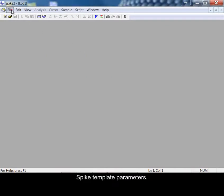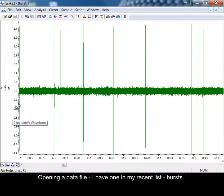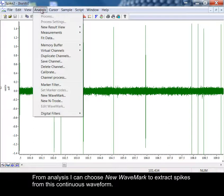Spike template parameters. Opening a data file, I have one in my recent list, Bursts. From analysis, I can choose New Wave Mark to extract spikes from this continuous waveform.